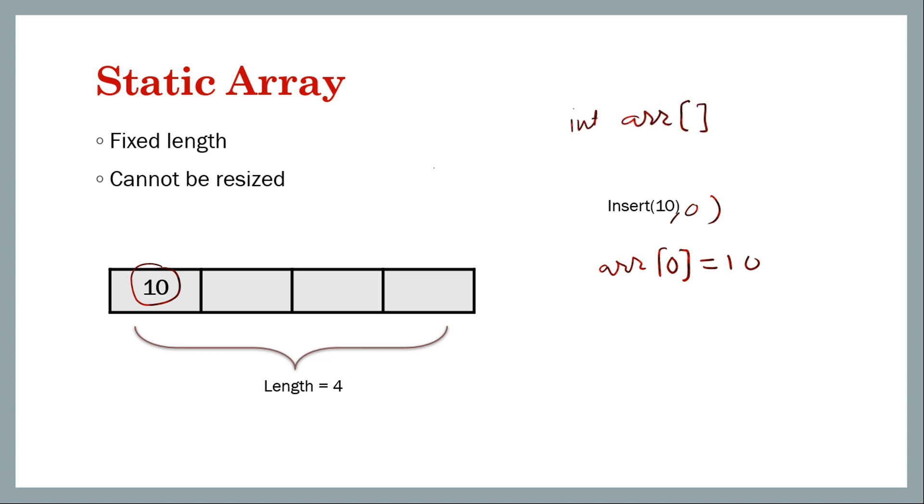Then we can insert 3 more elements: 20, 30, 40. Now you will see that this array is completely full. Its capacity was 4, its length was 4, now we have 4 elements in it. We can update one of the elements. Let's say I want to update third element, so we can write ARR[2] = let's say 70. Now this will be 70.